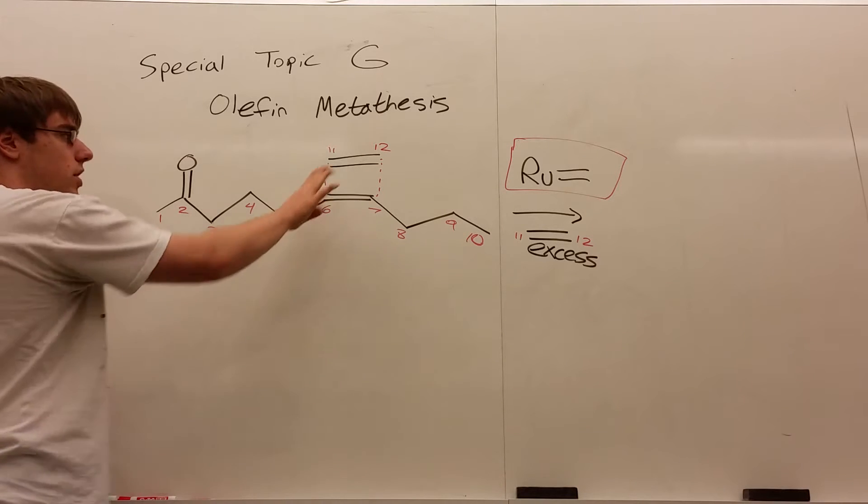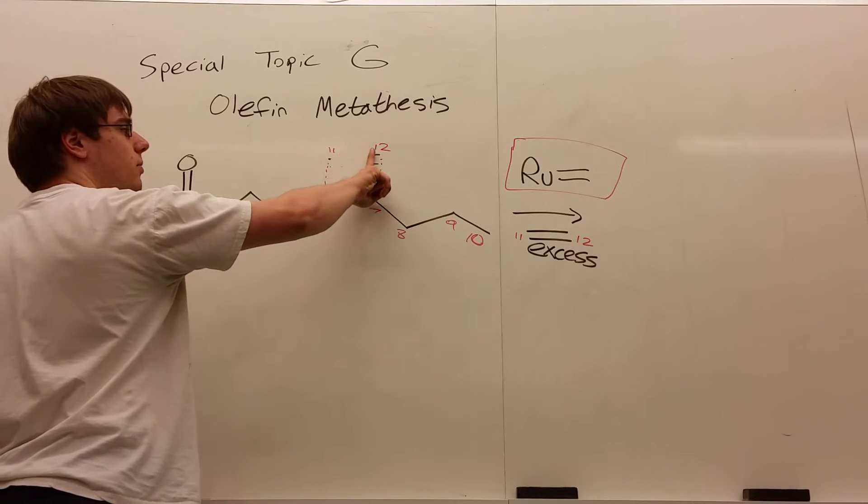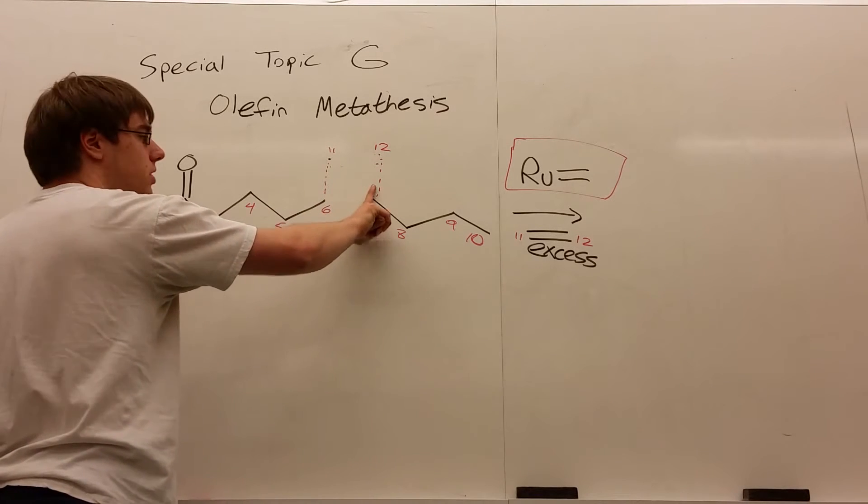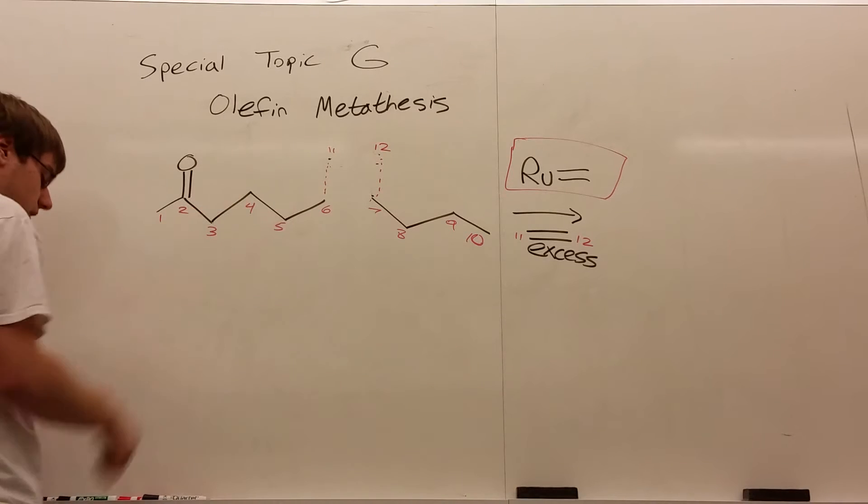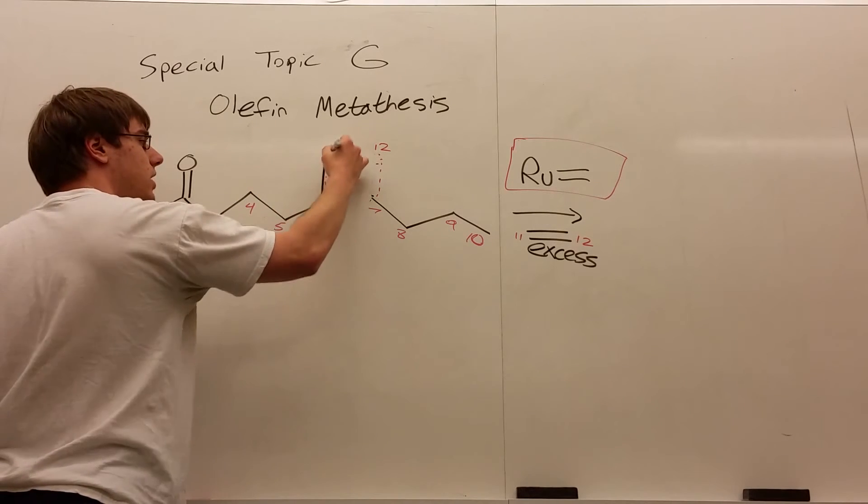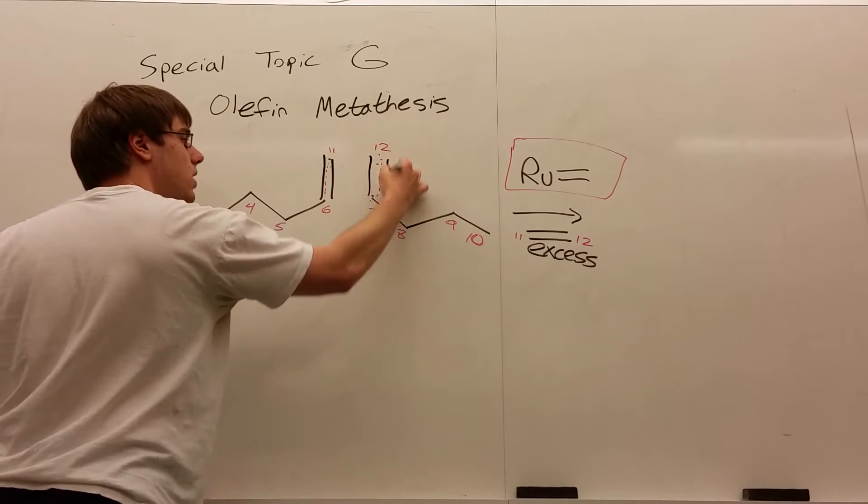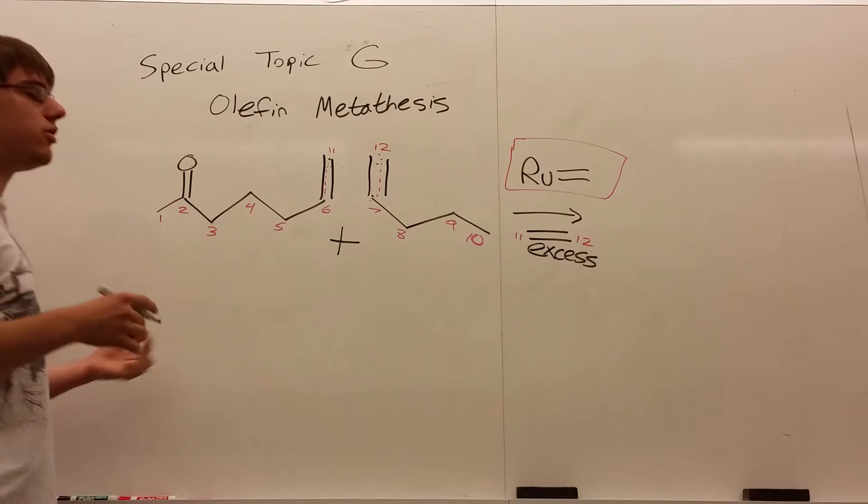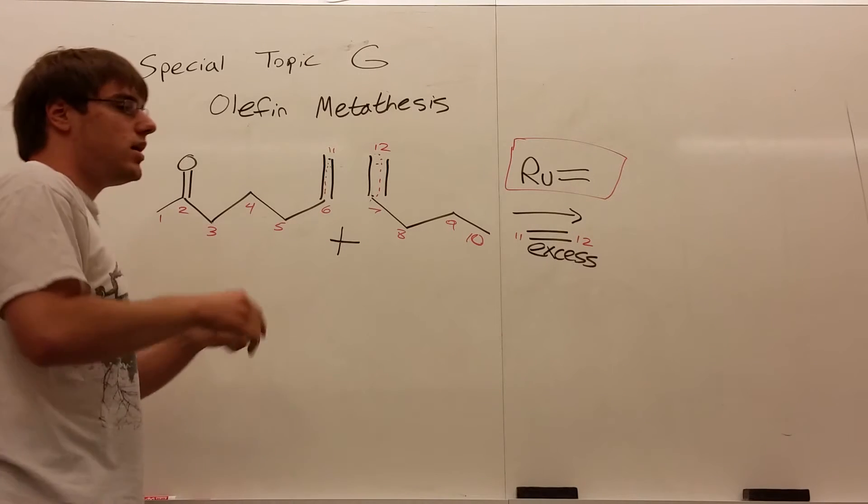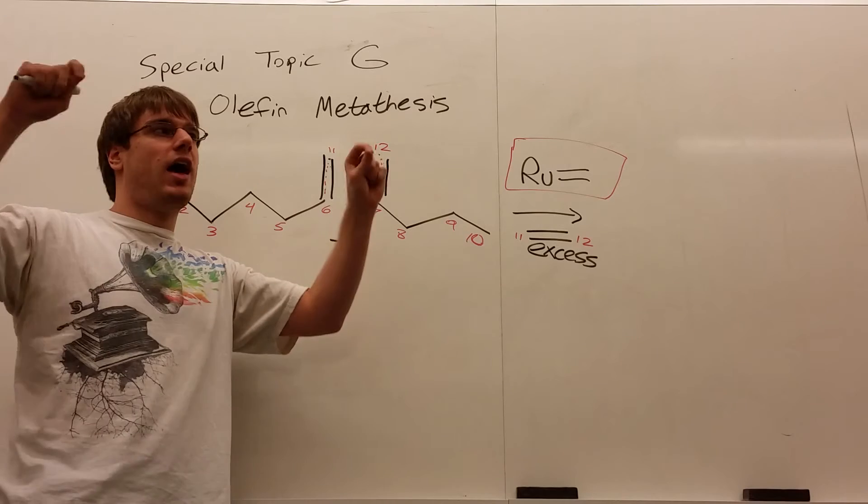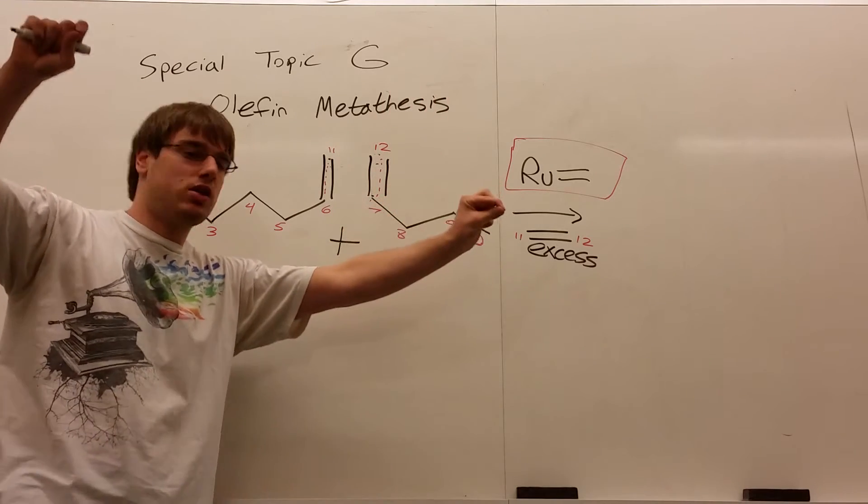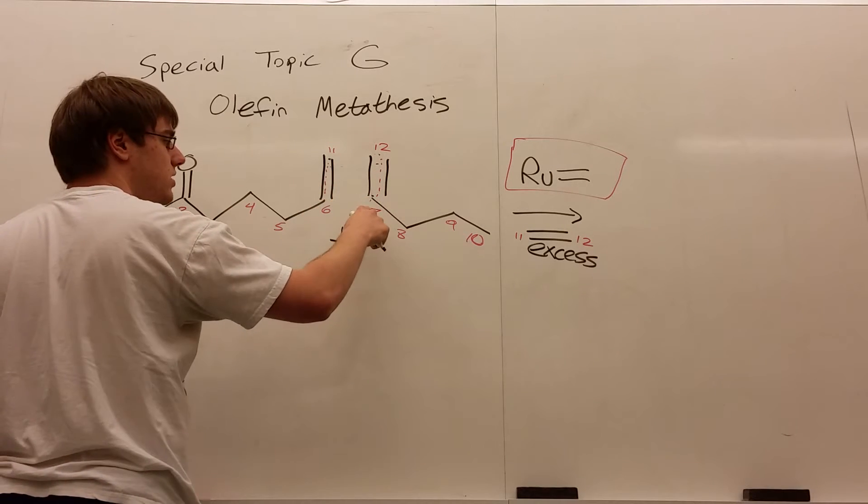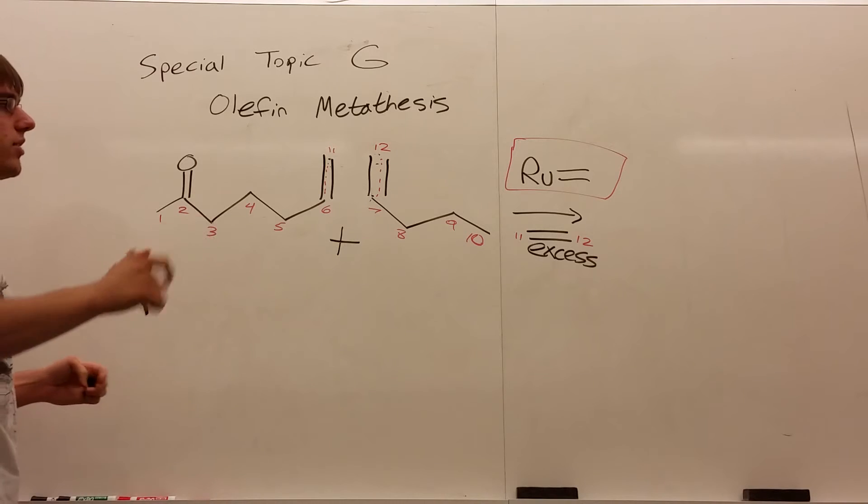Now what you're going to do is erase the original two double bonds. The double bond between eleven and twelve is now disappearing, and the double bond between six and seven is also disappearing. Now, on that dotted line that you drew, make two new double bonds like this. So these would be the two products of your olefin metathesis. What you end up doing is kind of snapping the double bonds in half and taking those little sticky pieces and sticking them to each other. So now eleven is connected to six, and twelve is connected to seven.